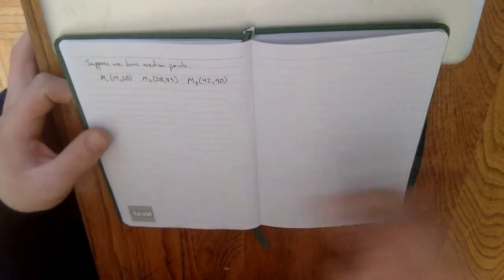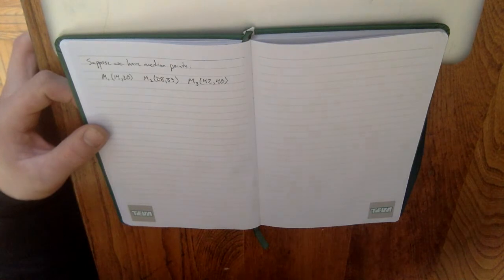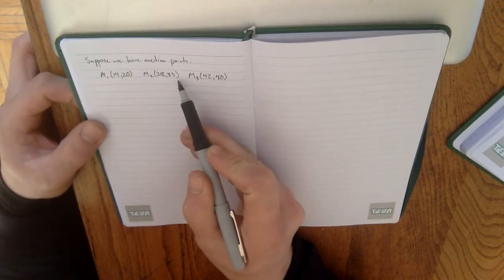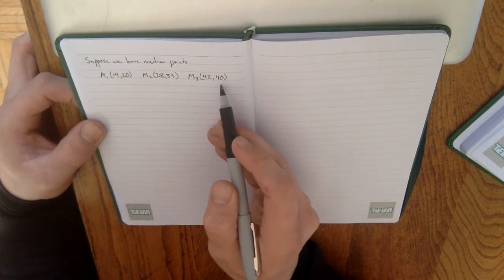Okay, so suppose we have some median points. We have M1 equals (14,20), M2 equals (28,33), and M3 equals (42,40).